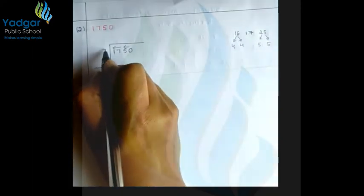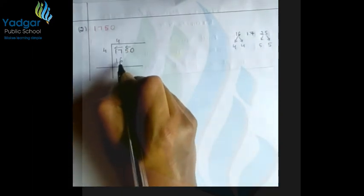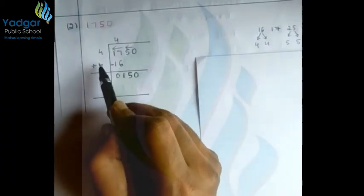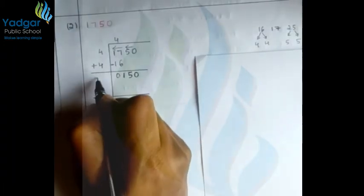16 is closest to 17, so we take 4 as the first quotient digit. Subtracting: 17 minus 16 = 1. Bring down the next group to get 150. Now add 4+4=8 to form the new divisor base, giving 80-something.